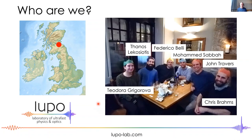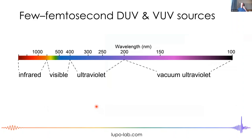I'm going to be talking about generating few-femtosecond pulses in the deep ultraviolet and the vacuum ultraviolet. The deep ultraviolet, by my definition, means two to three hundred nanometers. Our sources can generate all the way up to the infrared, and also into the vacuum ultraviolet region down to around 100 nanometers.